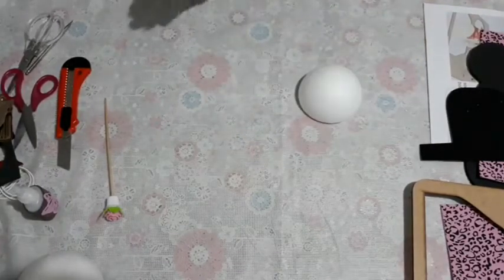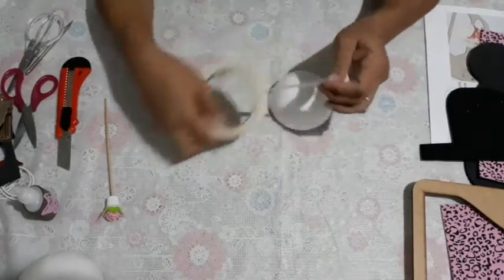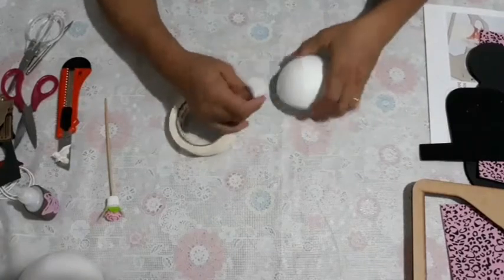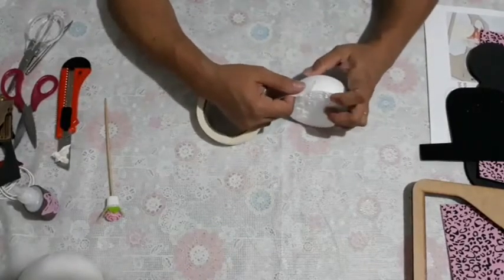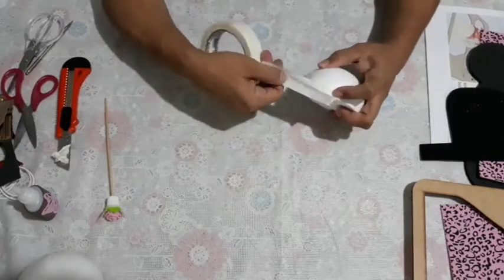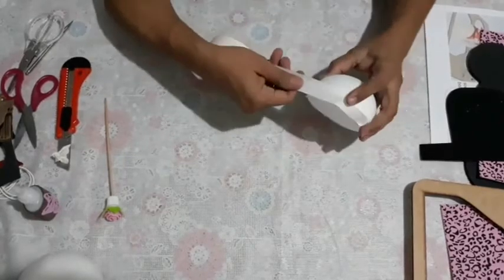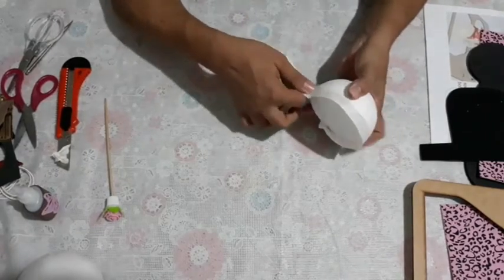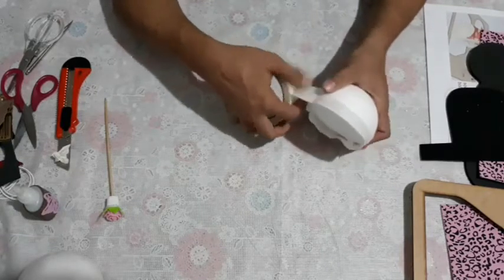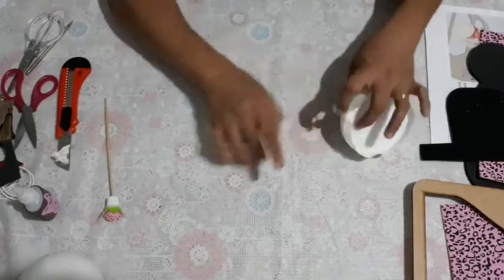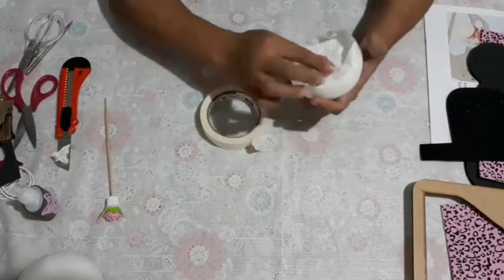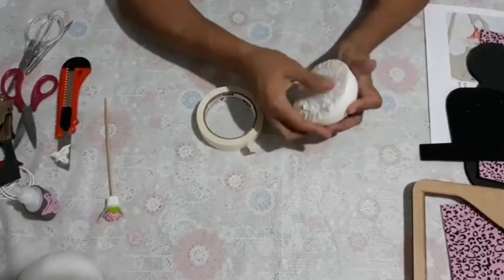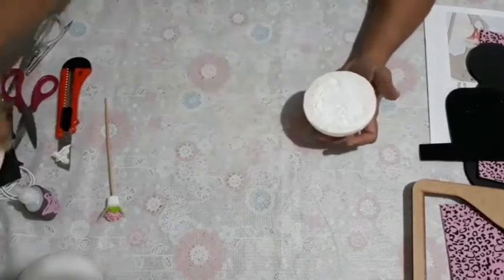Eu vou usar aqui a fita crepe. O que eu vou fazer? Pegar a fita crepe e vou posicionar na metade da fita, metade na bolinha. Vou fazer isso em toda a volta da bola. Para que eu tô fazendo isso? Porque aí a gente pode passar a cola instantânea direto sem corroer aqui o isopor. A gente vai fazer isso. Essa parte aqui que sobra, a gente cola pra dentro. Só isso aqui, que depois nós vamos passar a cola aqui também.